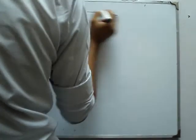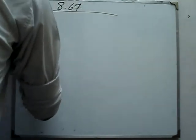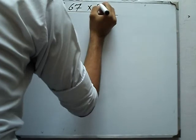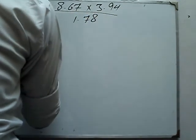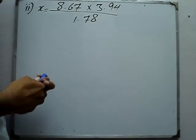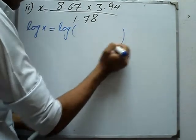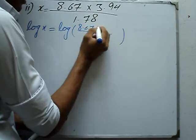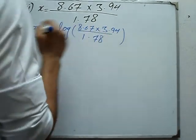Question number 8, Part 2. We have to evaluate 8.67 into 3.94 divided by 1.78. Let x equal this expression. So log of x equals log of 8.67 into 3.94 divided by 1.78.